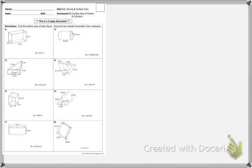Homework 11.5. I had a couple of questions on this. If you have any more questions, please bring them up to me so I can work some of these problems out. We're dealing with surface area of prisms and cylinders.